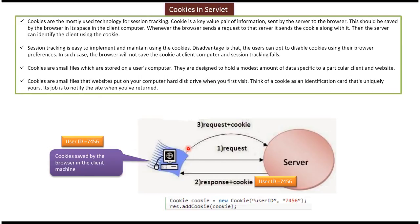In the third step, when the browser sends a request to the server, it sends the cookie along with the request — user ID equal to 7456. When the server receives this request, using this cookie user ID 7456, the server can identify that the request is coming from a client which has previously visited. By this way, we can track the particular user using cookies and implement session tracking easily.